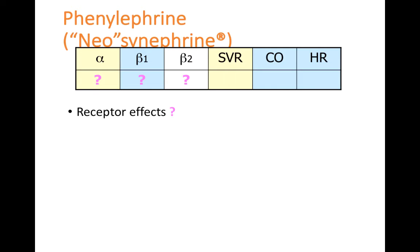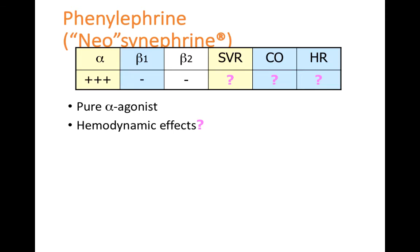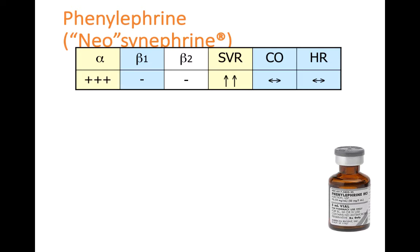Phenylephrine, brand name Neo-Synephrine — commonly called 'neo' in the hospital — is a pure alpha agonist with no beta-1 or beta-2 effects. Based on its alpha activity, it primarily increases systemic vascular resistance (SVR), which is how it raises blood pressure. Because it lacks beta-1 or beta-2 effects, heart rate and cardiac output don't change significantly.